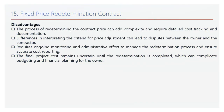While the fixed price redetermination contract offers flexibility, it also comes with notable disadvantages. Added complexity: the process of redetermining the contract price can require detailed cost tracking and documentation, making it more challenging to manage. Risk of disputes: differences in interpreting the criteria for price adjustment can lead to disputes, potentially causing delays. Ongoing administrative effort: managing the redetermination process requires ongoing monitoring to ensure accurate cost reporting. Uncertain final cost: the final project cost remains uncertain until the redetermination is completed, which can complicate budgeting and financial planning for the owner.